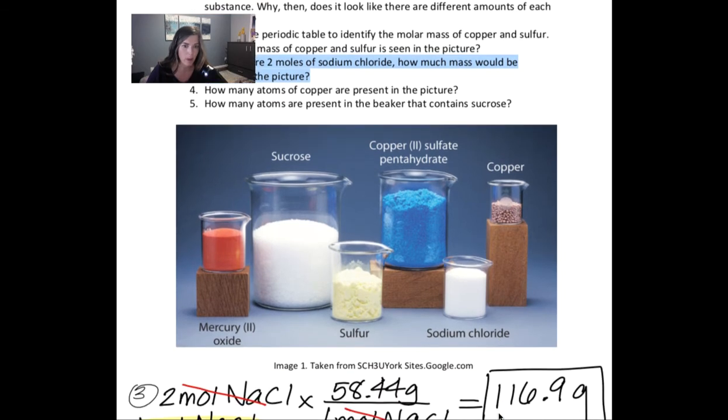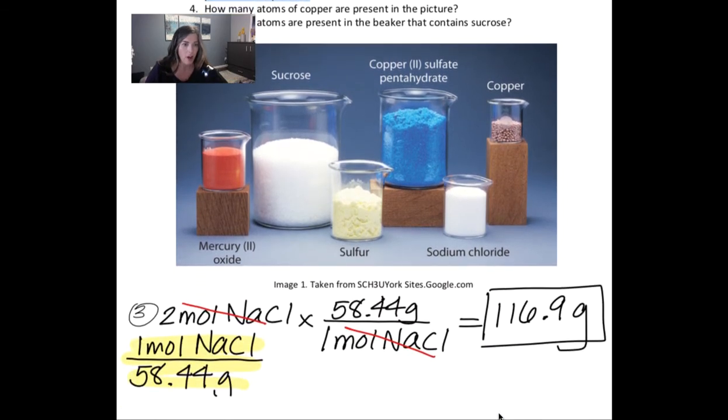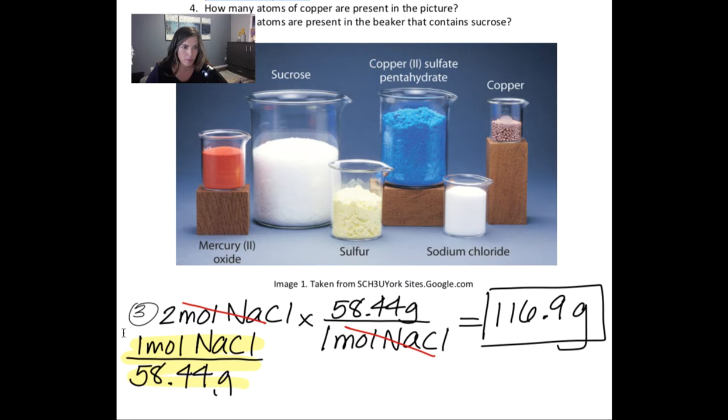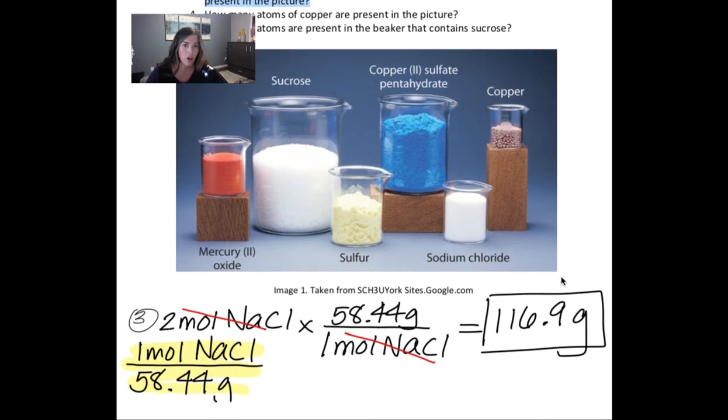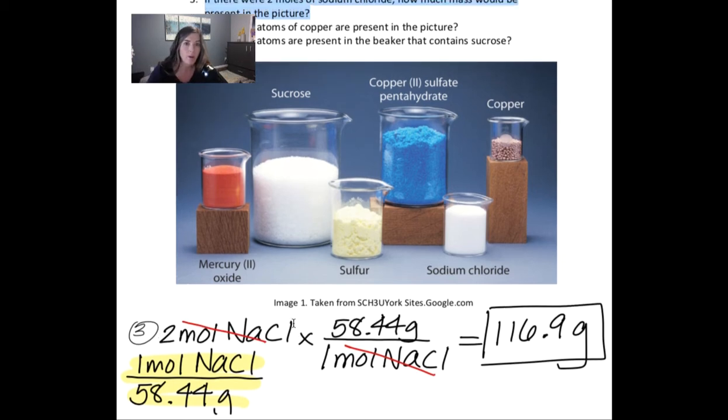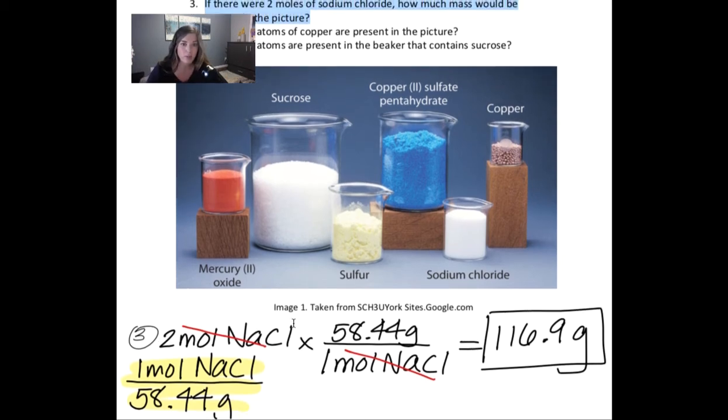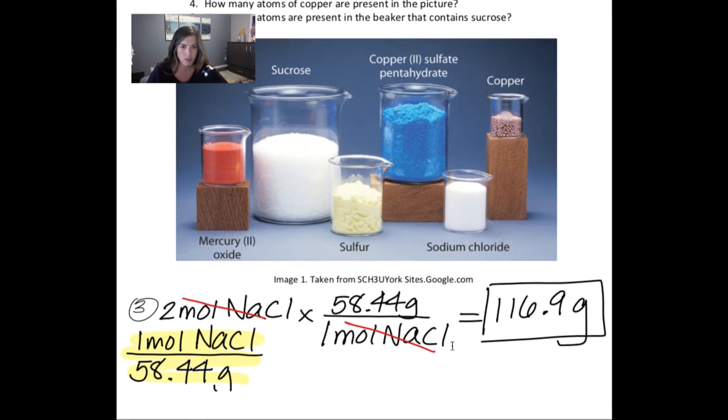Okay, so let's look at number three. Okay, this is how I would represent number three. So it says in number three, if there were two moles of sodium chloride, how much mass would be present? Okay, so if you have two moles, I start writing down in my calculation whatever is given in the problem. So two moles.